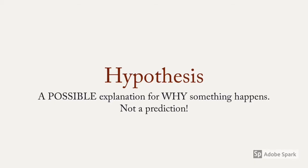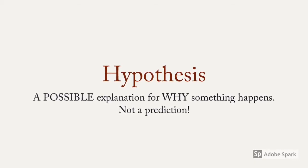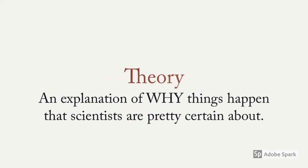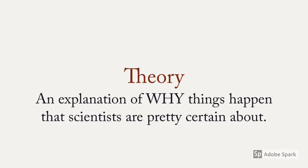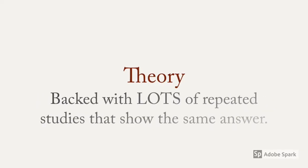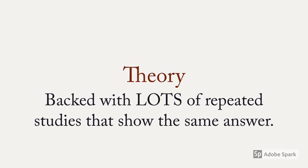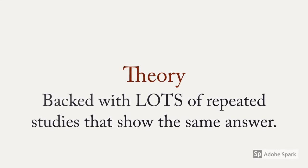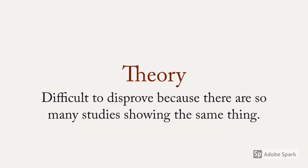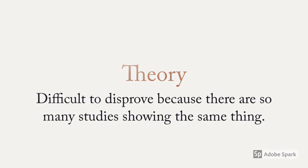A hypothesis is a possible explanation for why something happens. Remember, it's not a prediction. A theory is an explanation about why things happen that scientists are pretty certain about. Scientists can be certain about a theory because theories are backed with lots of repeated studies that show the same answer. Theories are very difficult to disprove because there are so many studies showing the same explanation.